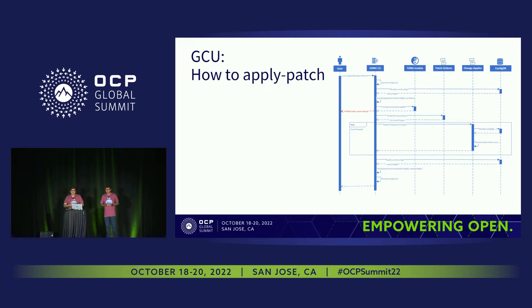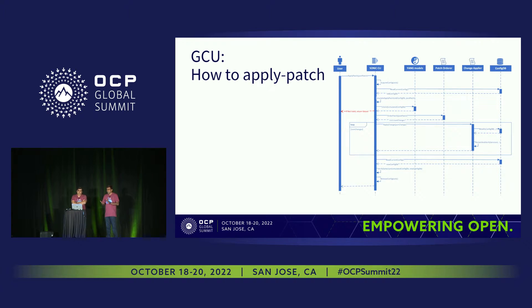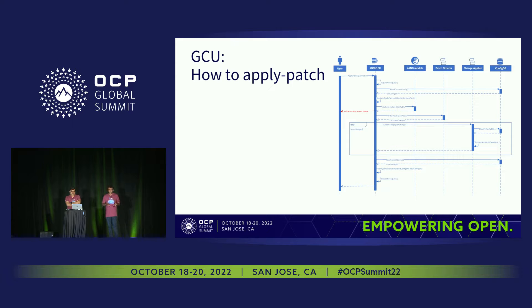Going deeper into each command: in the case of apply-patch, we take the log first. The user gives the JSON patch as input to the command line. We use the Yang model as a base for everything — for validating. There's a patch reorder, a config app layer, and the config DB on the device. The first step is to get the current config and simulate applying the JSON patch to it, generate a similar config file, and run Yang validation on that to check for Yang model failures. If there's a failure, we bail out immediately.